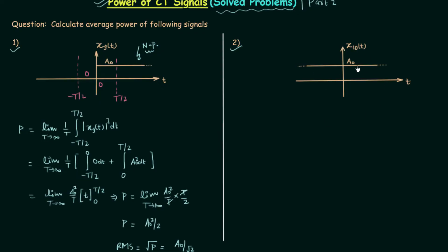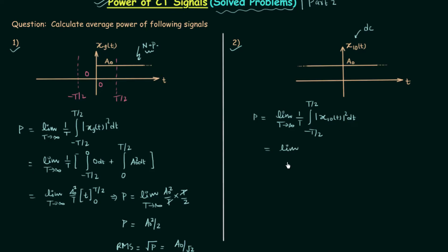Now let's solve the second question. The signal x10(t) is always equal to a0 from minus infinity to infinity — the signal value is always a0. Therefore this signal is a DC signal. We calculate the average power in a similar way: P = limit T→∞ of (1/T) integral from −T/2 to T/2 of |x10(t)|² dt. Substituting, this becomes limit T→∞ of (1/T) integral from −T/2 to T/2 of a0² dt. Since a0² is independent of time, we take it outside the integral.